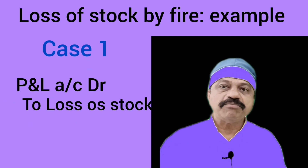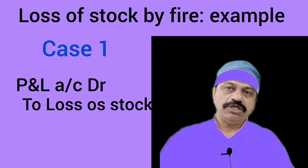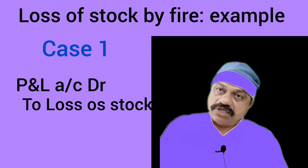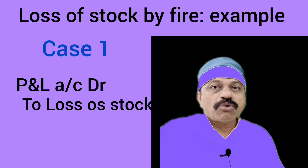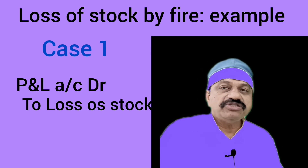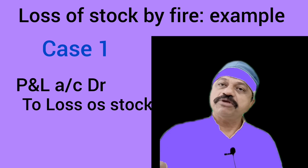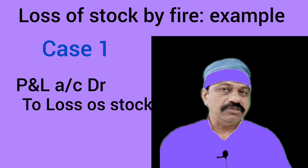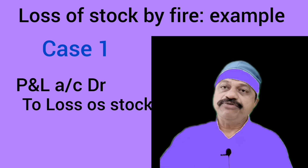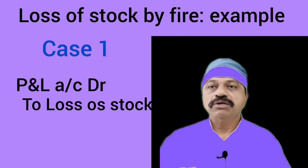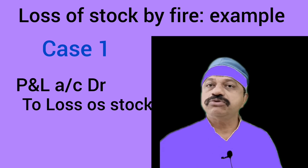Case number one: stock was not at all insured. In this case, stock destroyed by fire should be charged on the debit side of the profit and loss account. The adjusting entry is: profit and loss account Dr. Rs. 5,000 to loss of stock account Rs. 5,000.